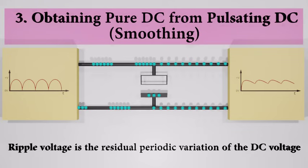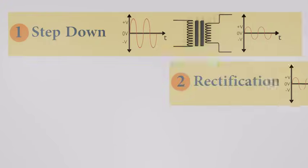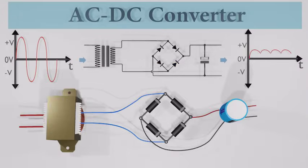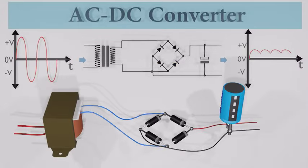Even though the output is smooth, there are little residual periodic variations. Now we know the basic three steps of the AC to DC conversion process. By combining all these steps we can make AC to DC converter like this.